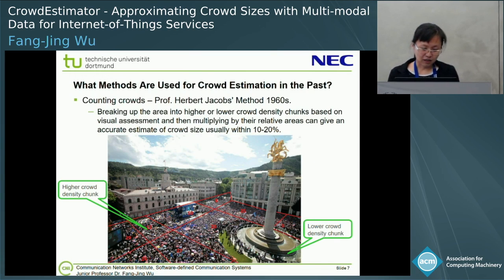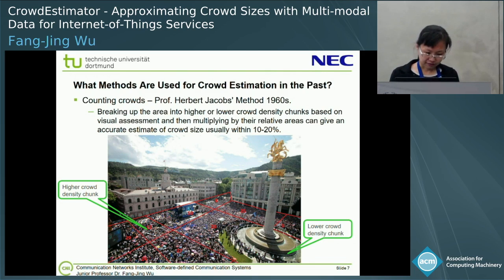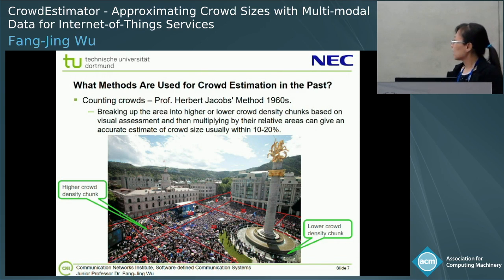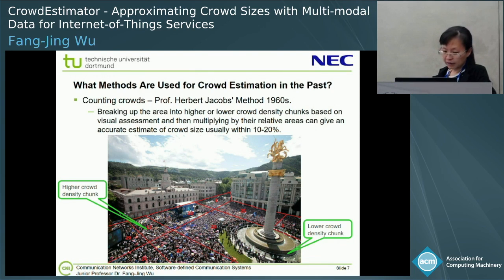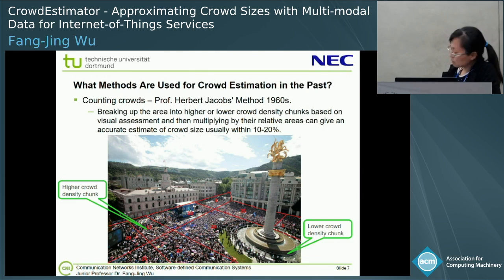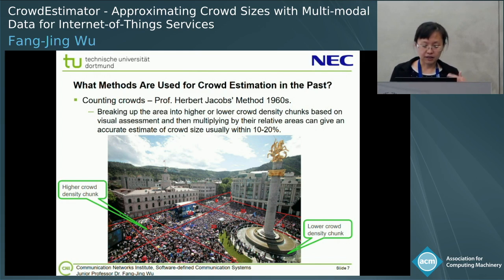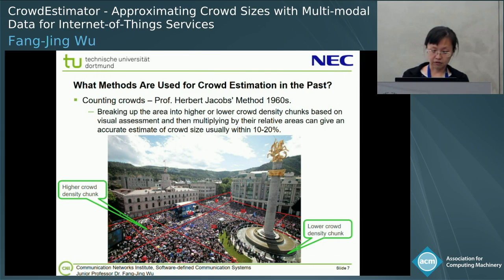What are the typical methods for cloud estimation in the past? There's a professor in the journalism area from UC Berkeley many years ago. He proposed we can divide the square into multiple sub-squares. Based on the density — some squares might be very dense and some not so crowded — we can estimate the cloud in a given area. With this typical approach, the accuracy can reach around 10 to 20 percent.